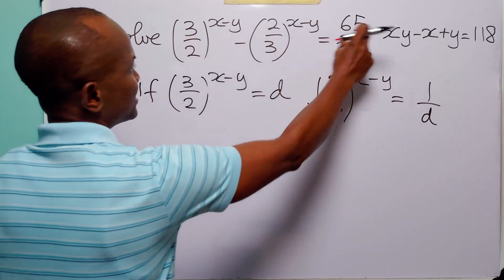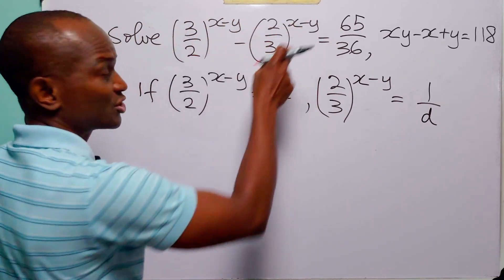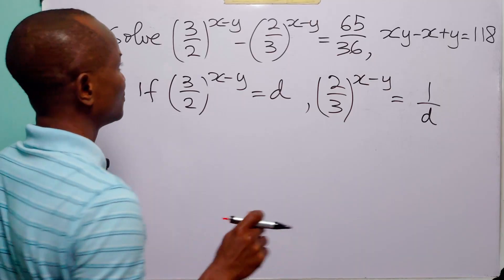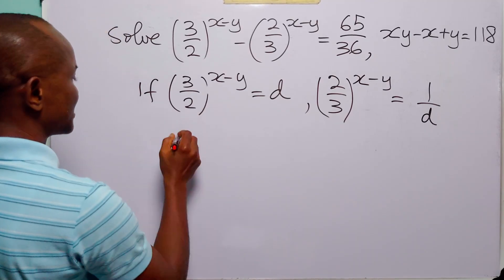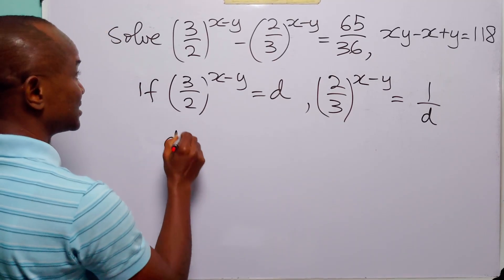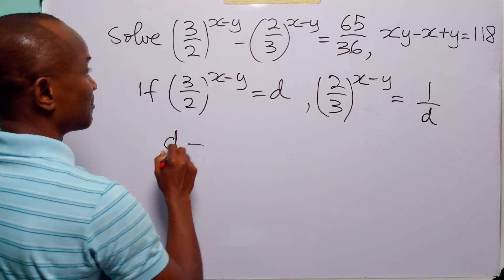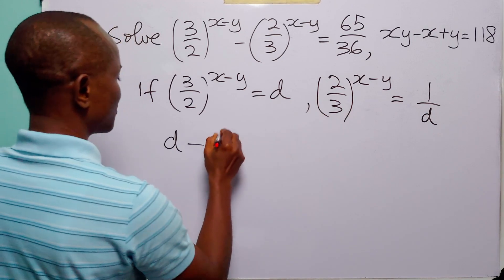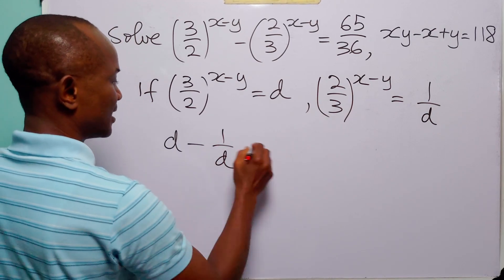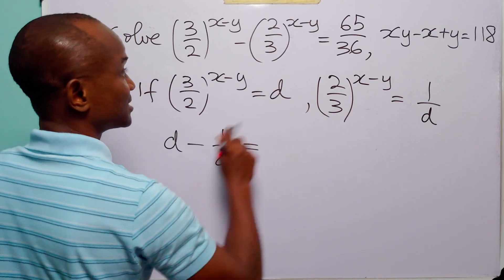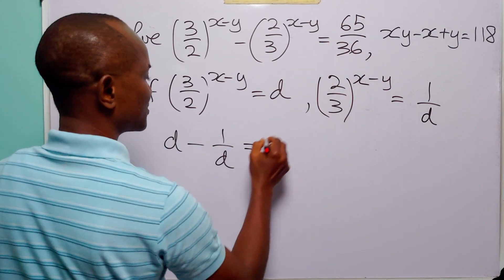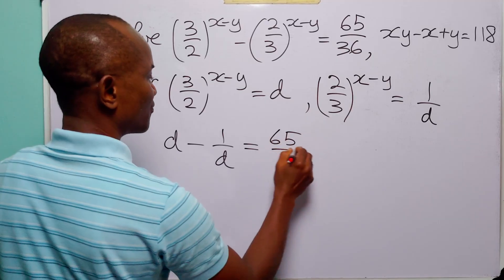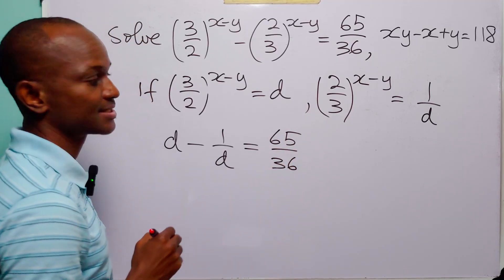Now, rewriting this first equation in terms of d, we have d minus 1 over d, and this is equal to 65 over 36.